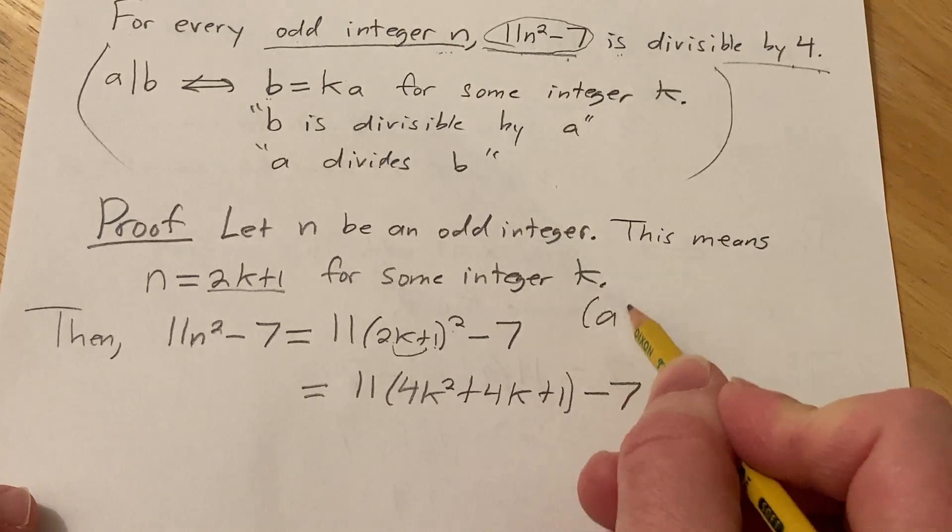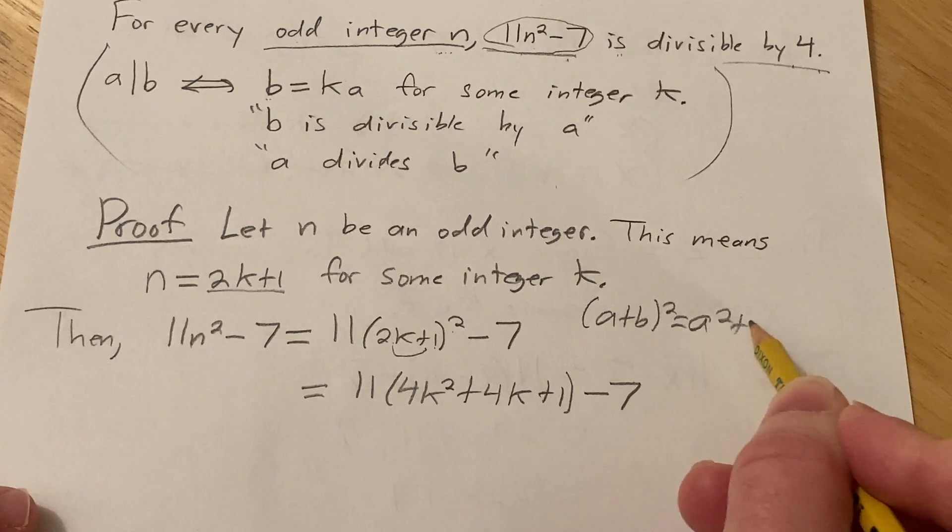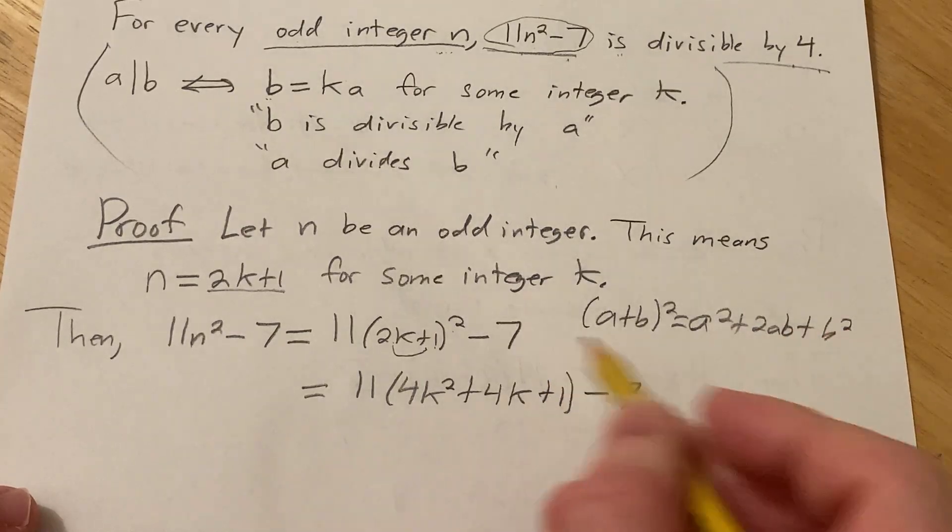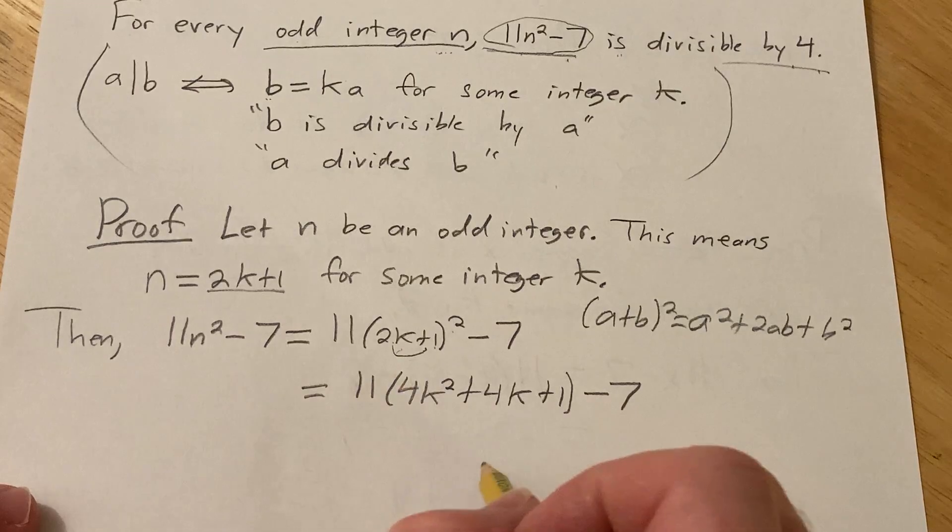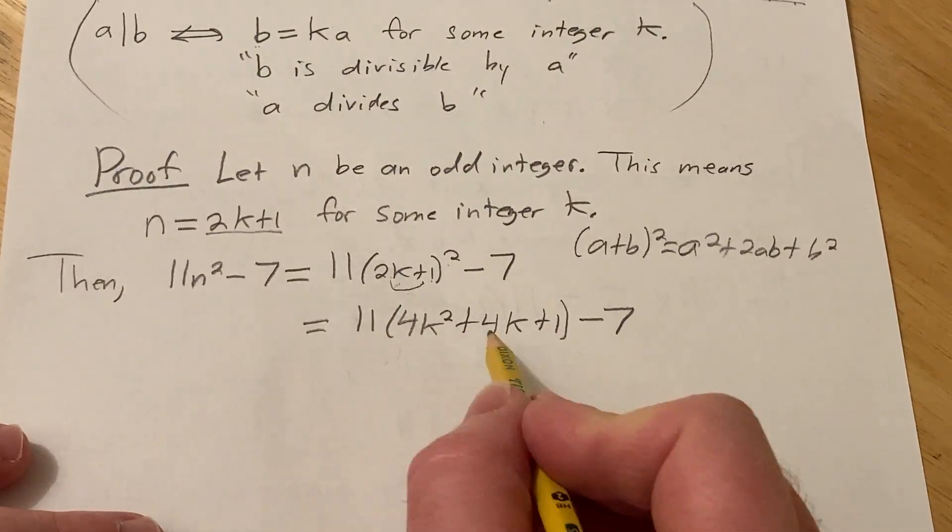That's just a formula if you have (a + b)². That's equal to a² + 2ab + b². That's the formula that I'm using to go from here to here. It's still not really a multiple of 4, so let's distribute the 11.